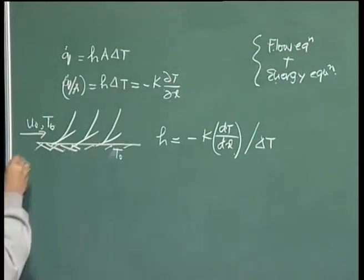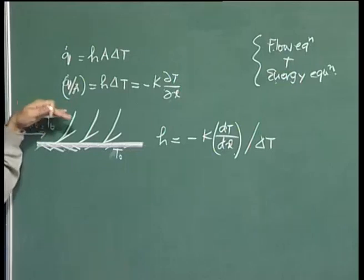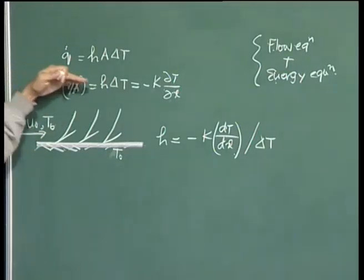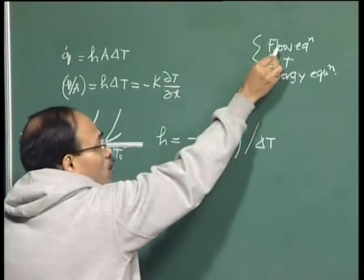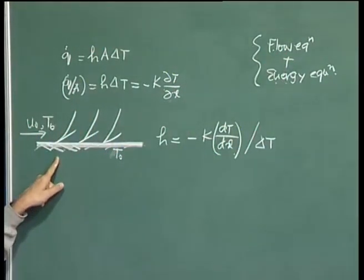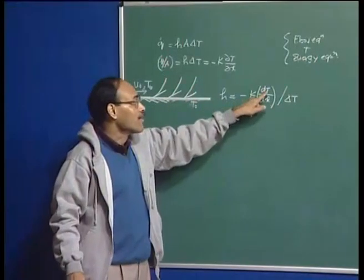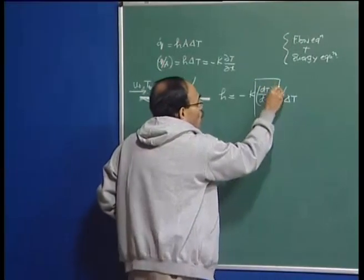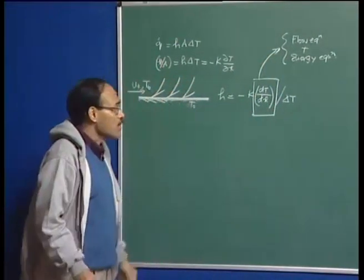The bulk temperature is the temperature far away from the solid surface — this is the flat plate. The bulk temperature is here, and the bulk velocity or free stream velocity is also here. If you know the flow equation and the energy equation applicable to this, you can solve and find out the temperature gradient. This quantity will be known from the solution of this set of equations.